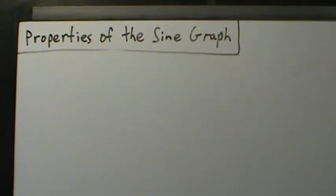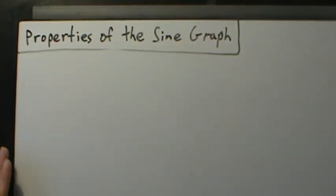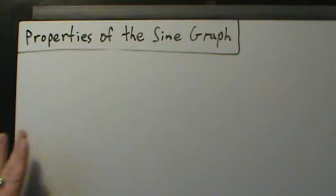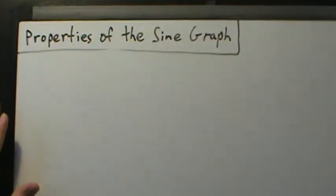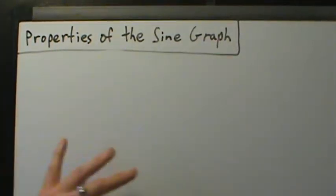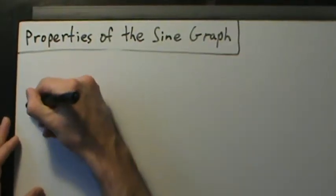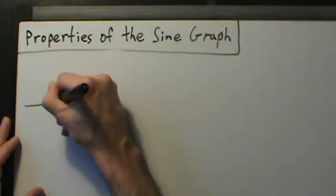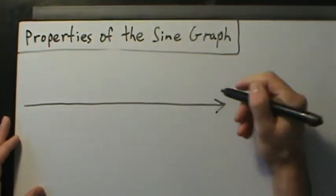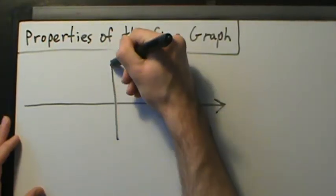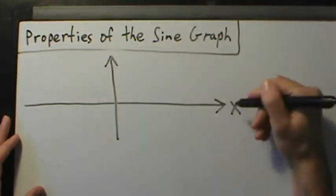In this video we want to start talking about some of the properties of the sine graph. We determined what the sine graph looks like in an earlier video when we did the animations with the unit circle. So now let's go ahead and redraw the graph here, just part of it. It goes infinitely far in both directions, so of course we can't draw the whole thing.